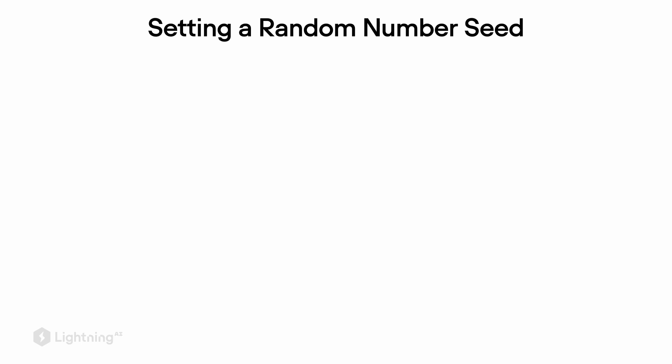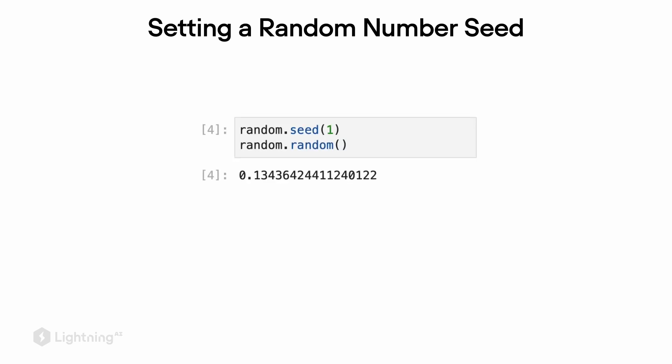However, to generate the same random numbers each time, we can provide a seed to the random number generator. To set this random number seed, we can call random.seed and provide an integer. Which seed you provide does not really matter, as long as you use the same seed. Here I'm using random.seed(1), a random number seed of one. Then if I call random.random again, I will get the same random number, and anyone executing the same code with the same seed will also get the same result. By providing this random seed, we make the code reproducible.